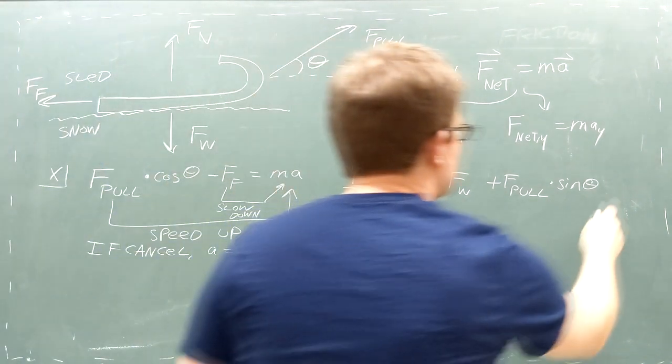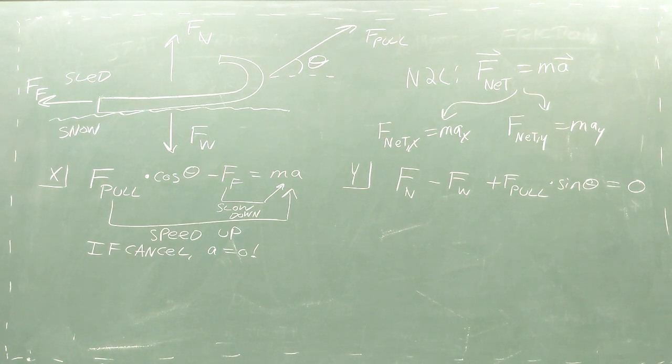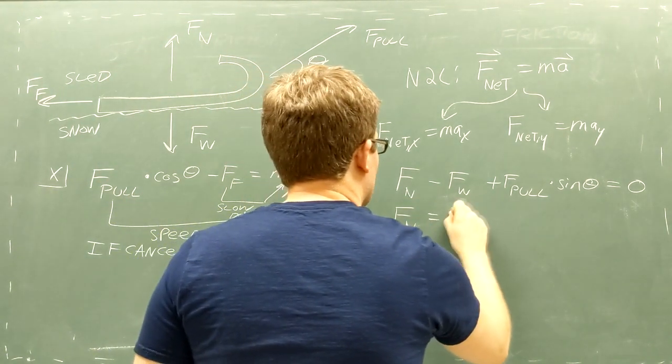Now, when we're pulling a sled across the ground, we don't expect it to move vertically up or down, so we can plug in zero for the y component of the sled's acceleration. Doing so allows us to solve this equation for the normal force.